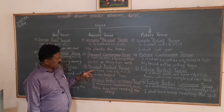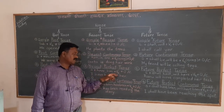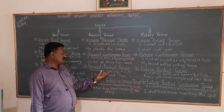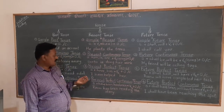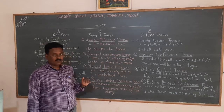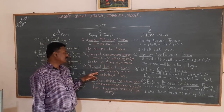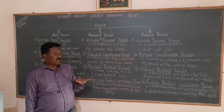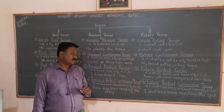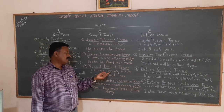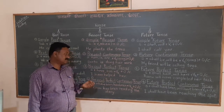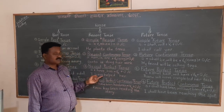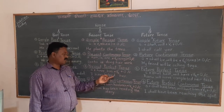The third is present perfect tense. The construction is subject plus have/has plus V3 plus object or complement. The distribution of auxiliaries: for I, we, you, and they, we use 'have'; for he, she, it, or a singular name, we use 'has'. Example: 'I have helped her.' Here 'have' is used with 'I', and 'helped' is V3.